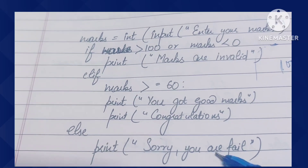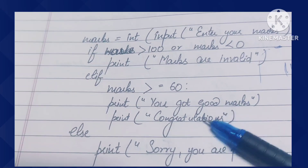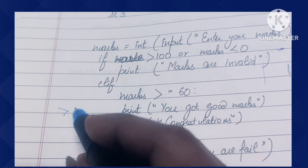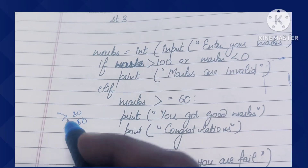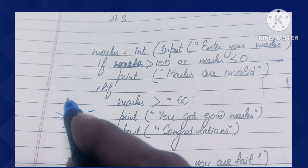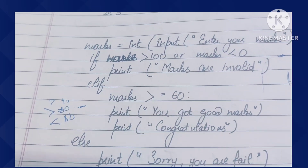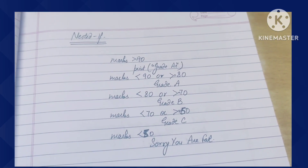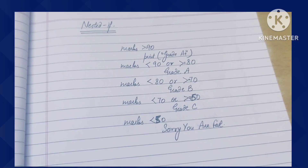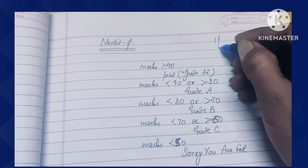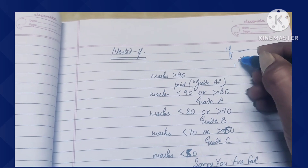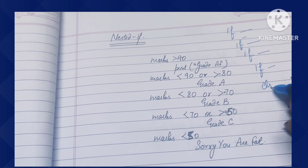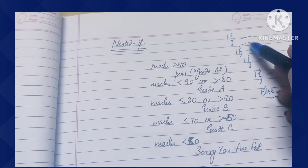For a full grading system with multiple grade levels, we use nested if. If we use if-else-if we can do it, but we also have the nested if approach. The nested if syntax is simple: first you add an if condition with its statements, then inside that you add another if condition with its statements, then another if, and so on. This structure becomes the nested if.